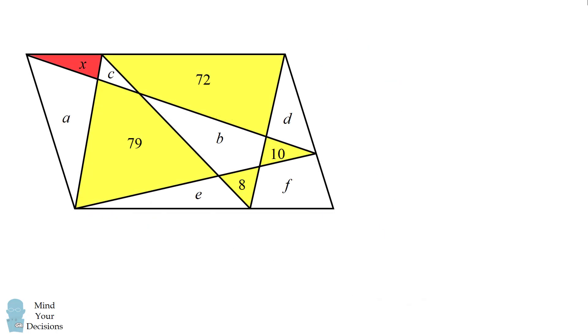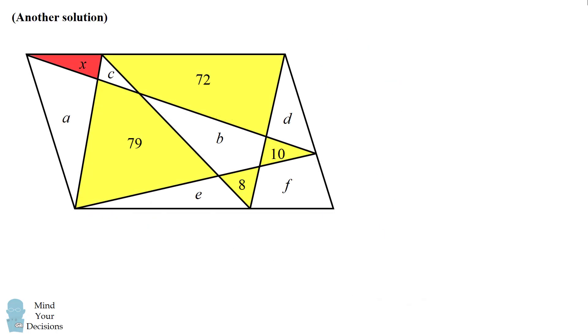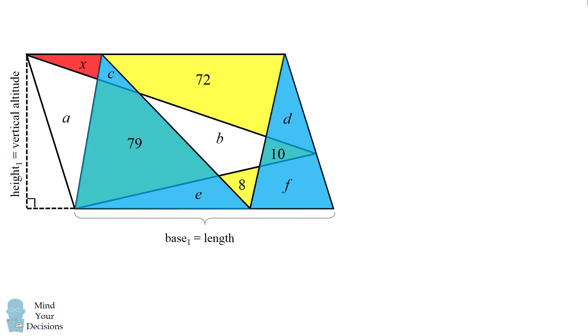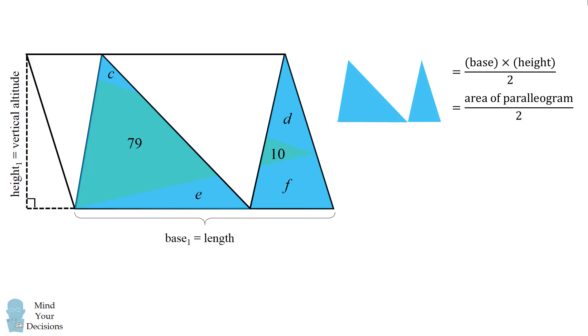But there's also another way if you pick some other triangles. So I just want to illustrate that for you because Bill also sent that to me. So imagine you take these two triangles. These two triangles span the length of the parallelogram, and they have a height equal to the vertical altitude of the parallelogram. Therefore their area will be equal to half the area of the parallelogram. The areas of these two triangles in total will be c plus 79 plus e plus d plus 10 plus f.